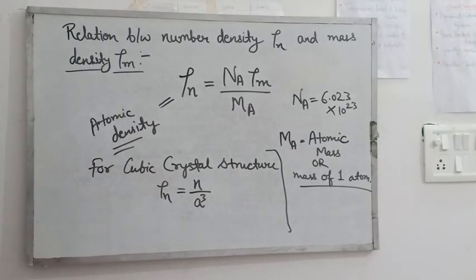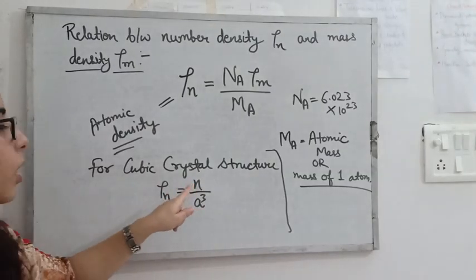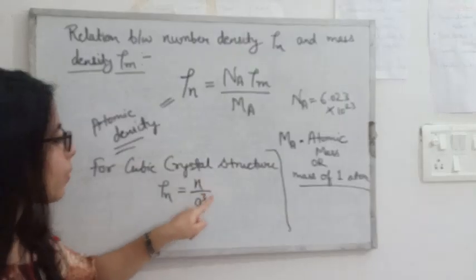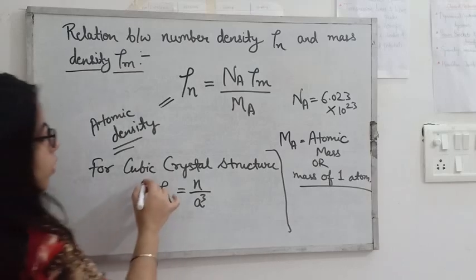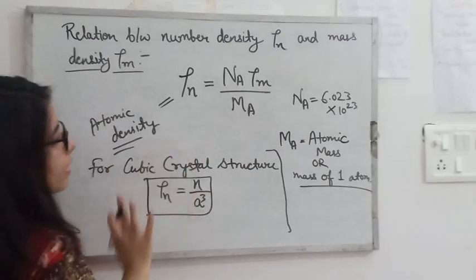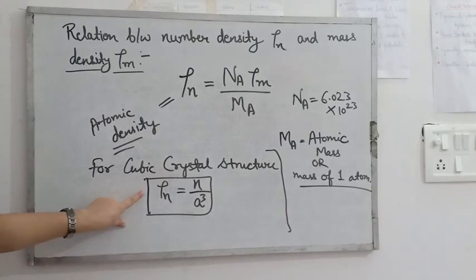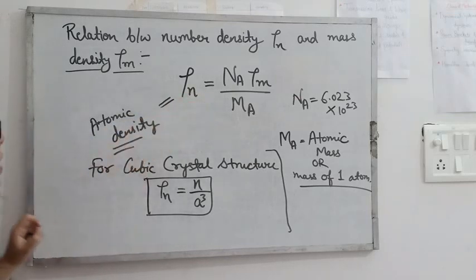Number density for cubic crystal structure is n upon a³, where n is the effective number of atoms per unit volume. So per unit volume we have one upon a³. So this is the formula for ρₙ for cubic crystal structure.